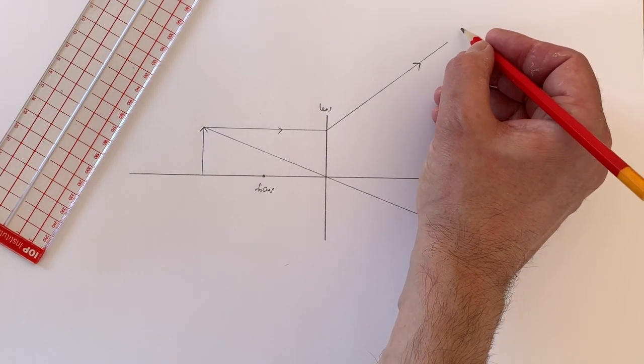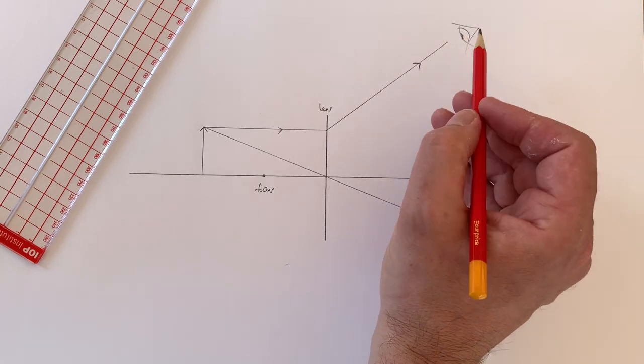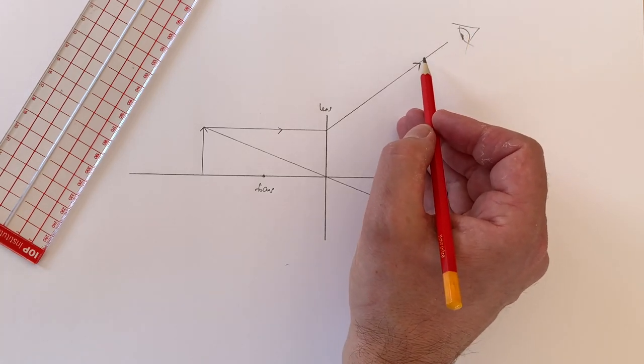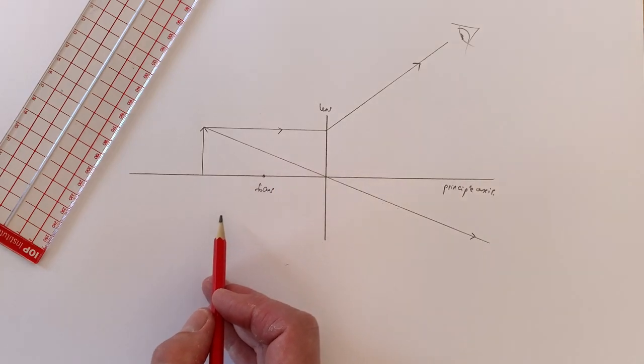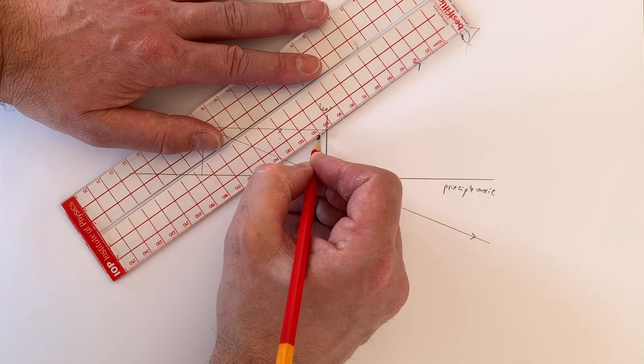But if an observer was to look at these rays from this side of the lens, from the point of view of the observer, this ray would look as though it's coming from somewhere over here. And hence we can trace the ray backwards using a dotted line.